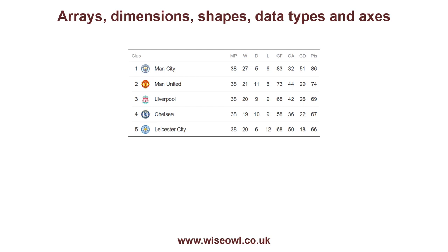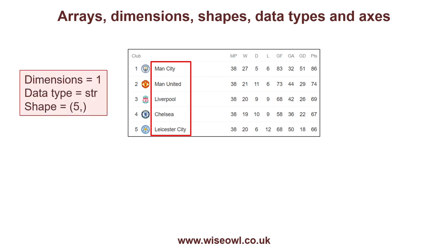I want to look now at how you can specify arrays' dimensions, shapes, data types, and axes — some of the main terms that NumPy uses. We might create an array to hold the list of football team names. In that case, you would be creating an array with a single dimension. The data type would be string, and the shape would be five. The comma after the five is to signify that this is an array but it's only got one dimension. This array would have a single axis, which is numbered zero.